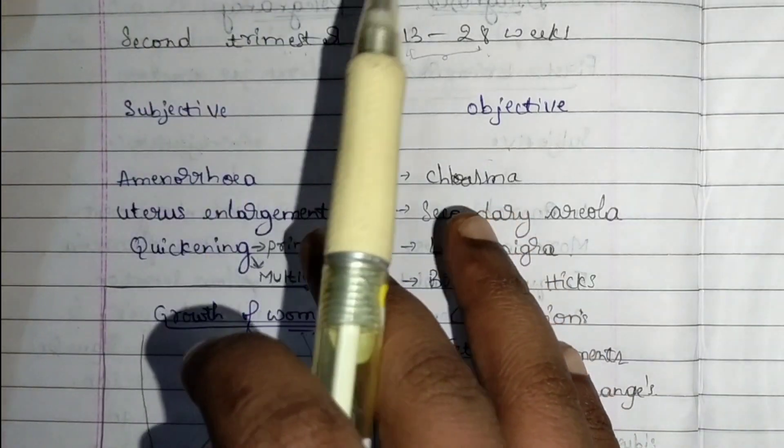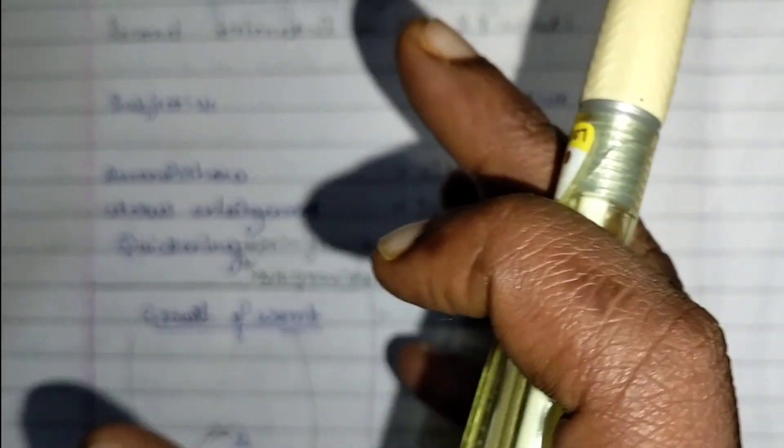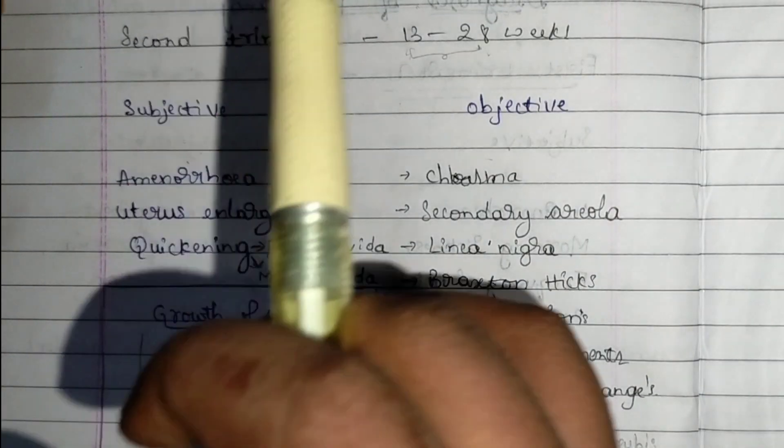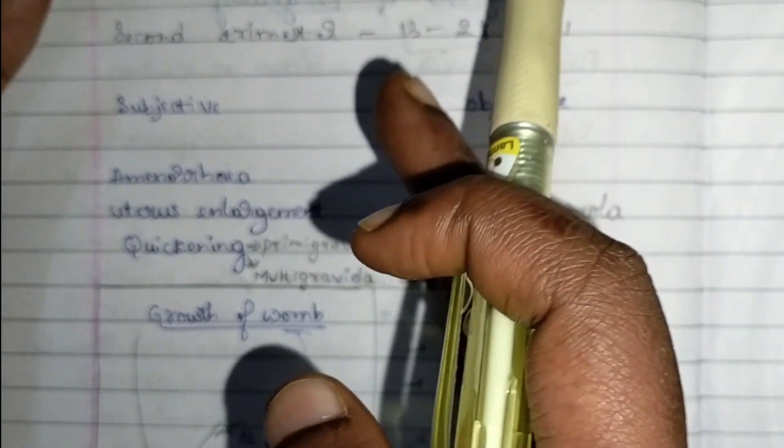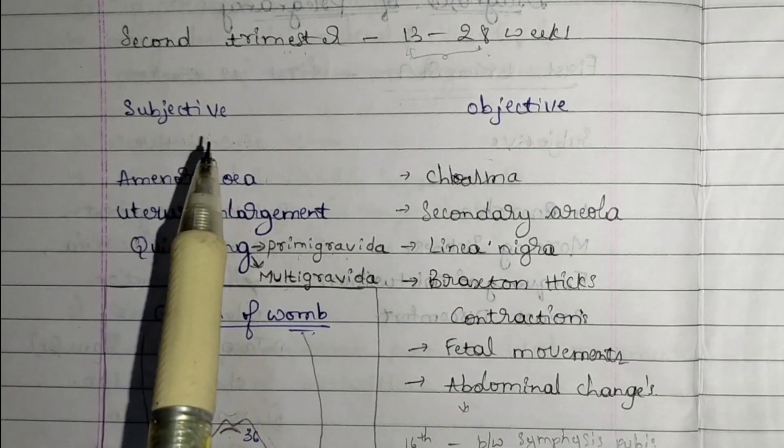Subjective data is the signs and symptoms expressed by the patient, the complaints we receive from the patient. Objective data is the signs and symptoms that are present in these three months according to obstetrics and gynecology science.